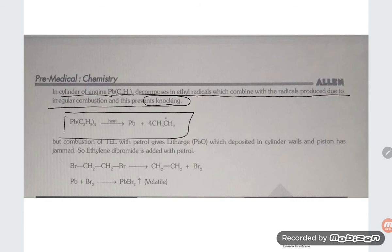But decomposition of TEL - tetraethyl lead - with petrol gives litharge PbO which deposited in cylinder walls and piston. So ethylene...